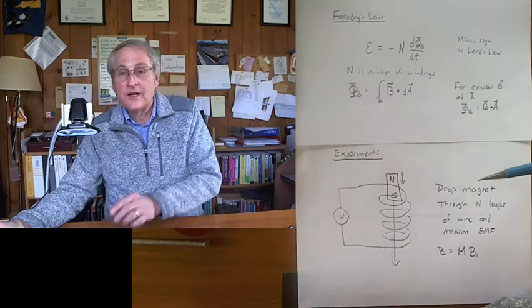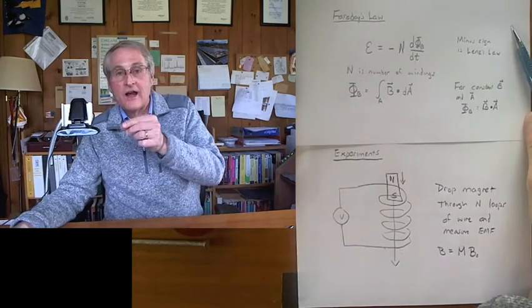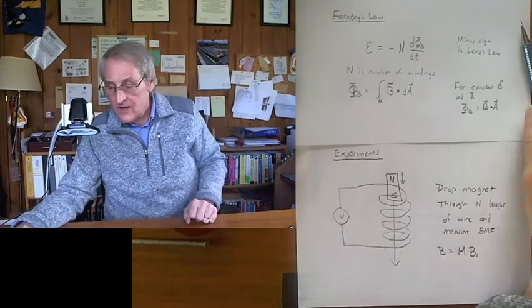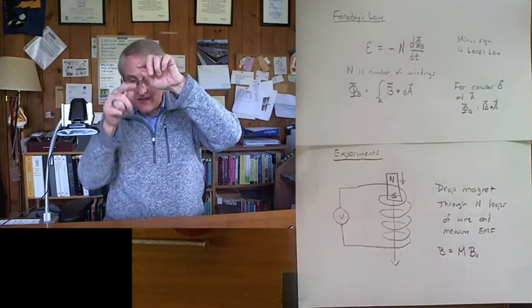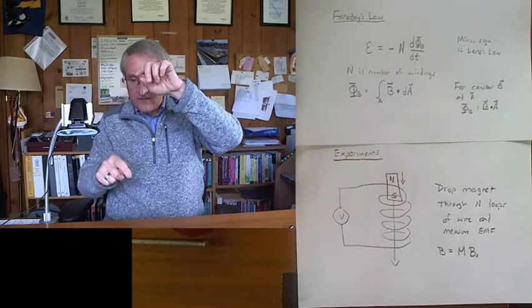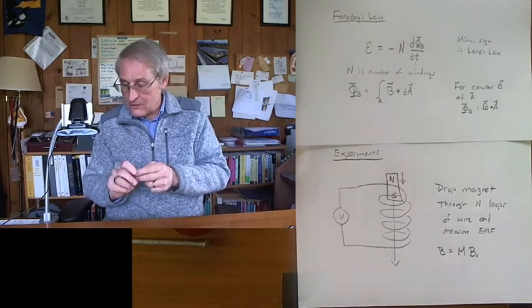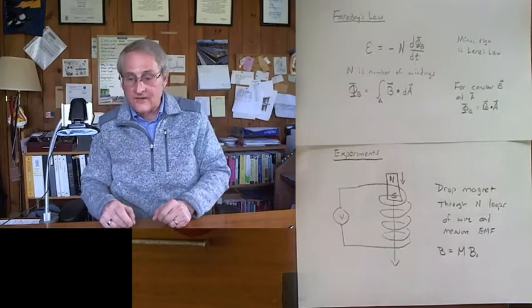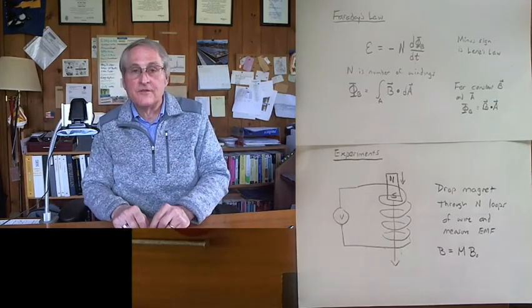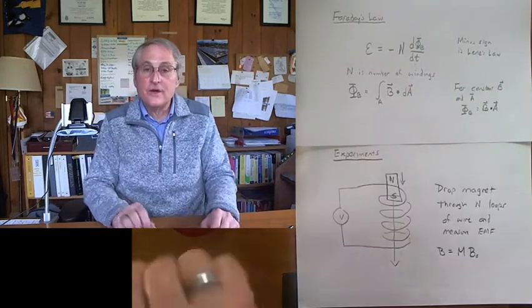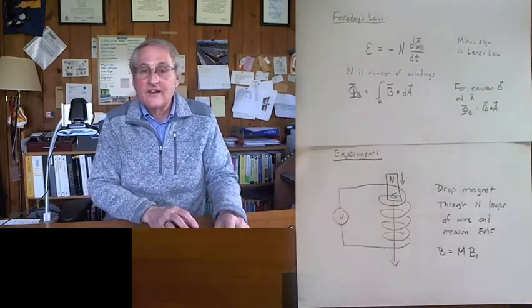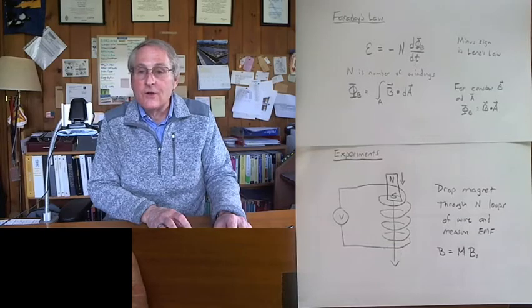And we'll do that by dropping the magnetic pellets from higher and higher up. And of course, then it drops by gravity. That's physics one lab. And when it gets down to the bottom to go through the loops, how fast is it going? It's going to be going faster if we drop it from higher up. So we'll be able to test that part. So these are four different experiments that let us test four different aspects of Faraday's law.